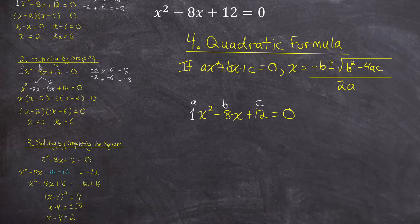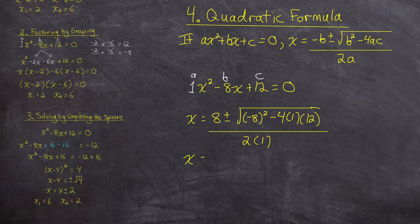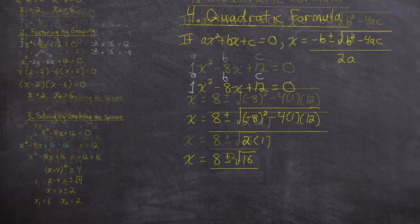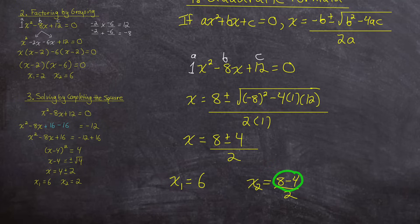Substituting into the quadratic formula: x equals negative times negative 8, which is positive 8, plus or minus the square root of negative 8 squared minus 4 times 1 times 12, all divided by 2 times 1. Simplifying: 8 plus or minus the square root of 64 minus 48, which is 16, all over 2. The square root of 16 is 4. So splitting into two answers: x equals 8 plus 4 divided by 2, which is 6; and x equals 8 minus 4 divided by 2, which is 2. Same two answers once again with the quadratic formula.